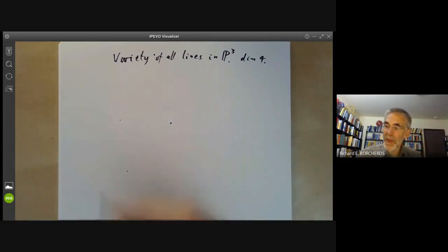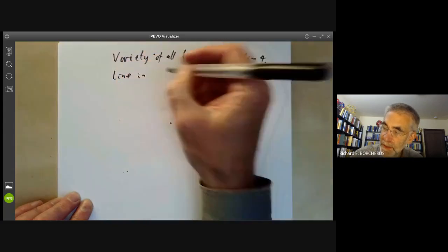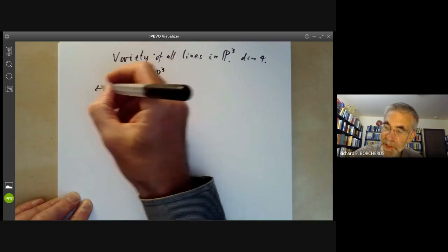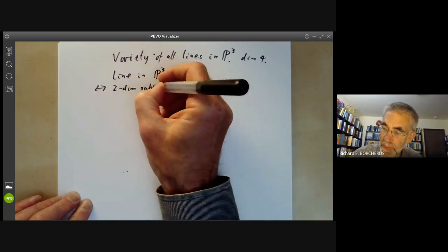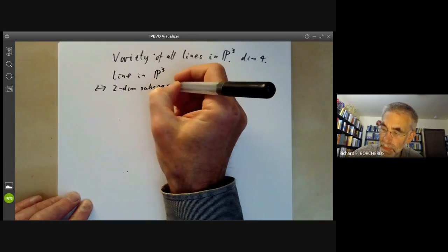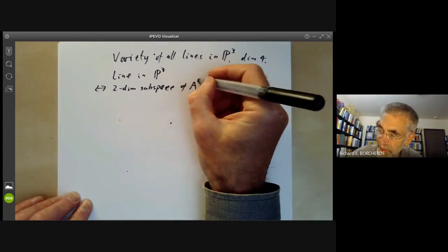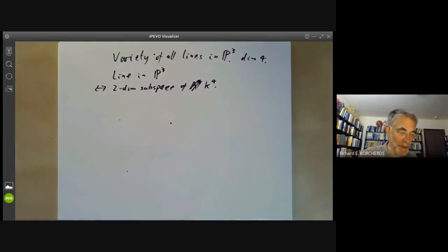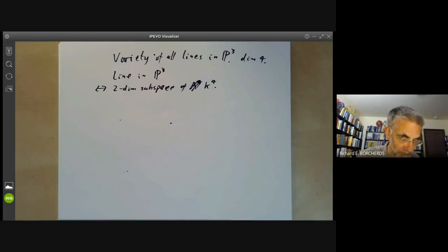A line in P3 corresponds to a two-dimensional subspace of a four-dimensional vector space. Let's write that as a vector space rather than affine space because we're picking the origin. So we're picking a two-dimensional subspace of the vector space K4.